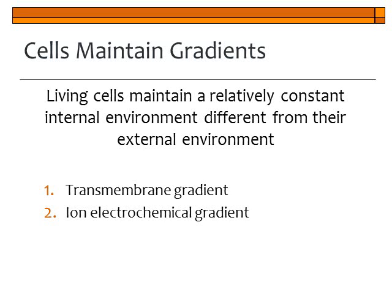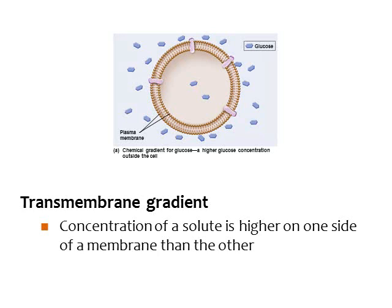Cells use passive diffusion to help maintain different types of gradients. Living things maintain a relatively constant internal environment — homeostasis — which includes maintaining temperature, pH, and chemical gradients. Internal environments are usually very different compared to the external environment. There are two types of gradients: transmembrane gradients, where solute concentration is higher on one side of the membrane, and ion electrochemical gradients.